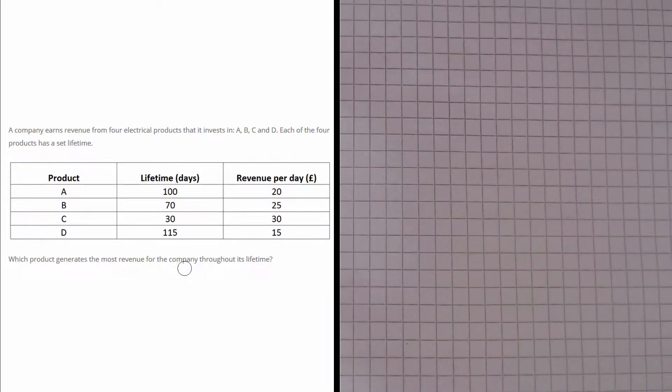So all we need to do is to find out the total amount of revenue for each of these four products and compare to see which is the largest. So what we are going to do is multiply the number of days by the revenue per day for each product.